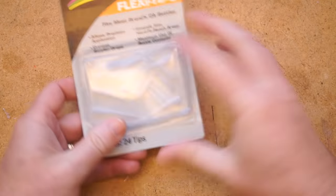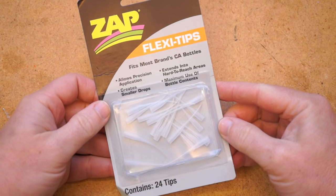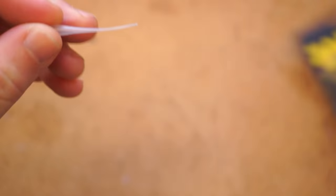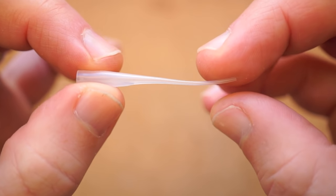Next up, for $6, a box of disposable, flexible tips you can use with super glue. You get 24 in a box, and they allow you to put down a very fine, precise amount of glue.